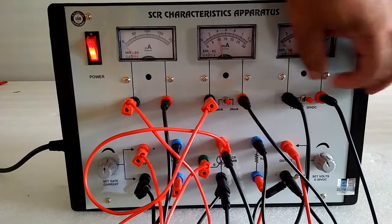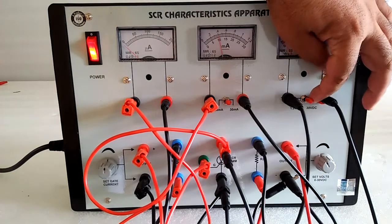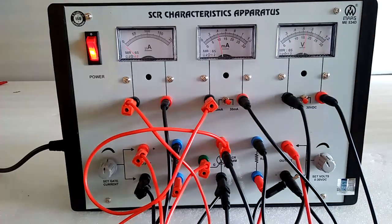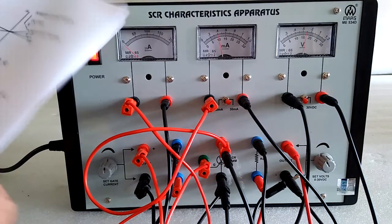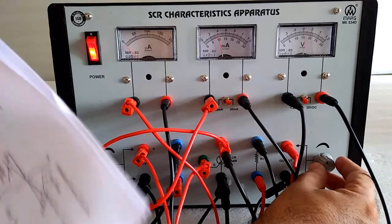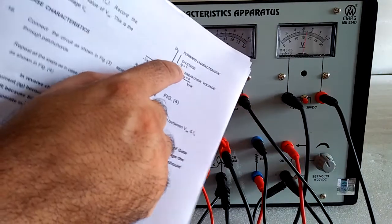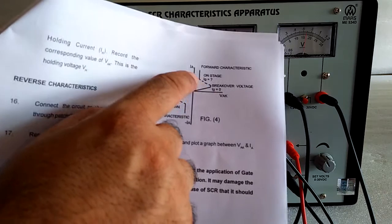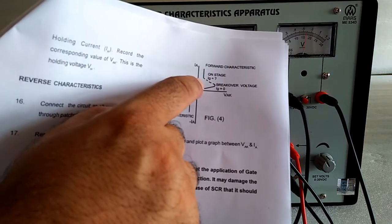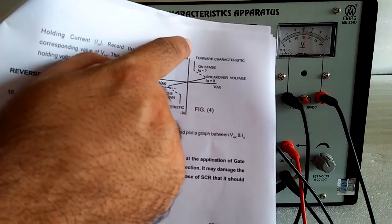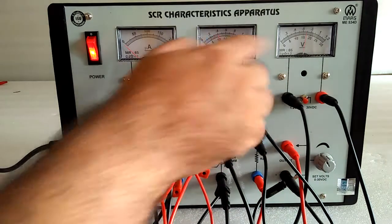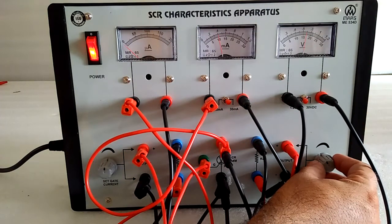Now for reading of the voltage, change the switch to 1.2 volt DC. Increase the voltage and as per the characteristics, voltage is constant and current will increase. So current will increase and voltage almost constant.